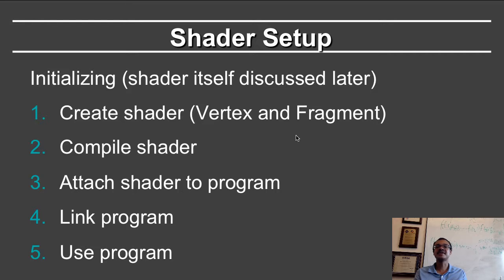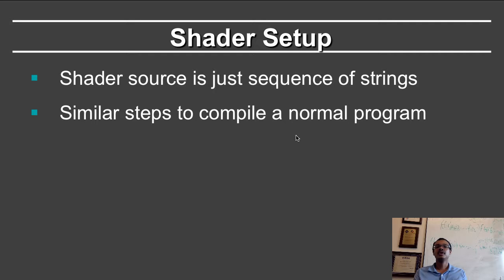Let's now talk about the shader setup. Shaders must be initialized just like any program — effectively they are a program. This involves a sequence of steps: first you have to create the shader, vertex and fragment; you have to compile the shader; you have to attach the shader to the program; link the program; and finally use the program. Note that in OpenGL, the shader source is just a sequence of strings. These strings can be specified as part of the OpenGL program, and they are compiled on the fly while the program is running, using the same steps as compiling a normal program.